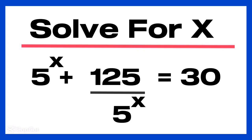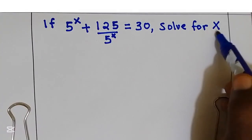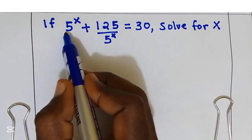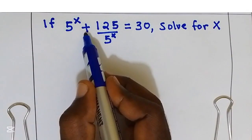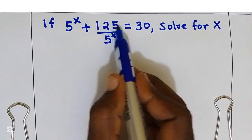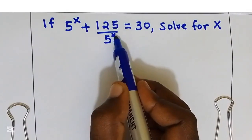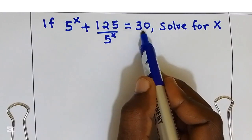Hello, welcome. My name is Walter. We have an exponential equation we are going to solve together. We are supposed to solve for x given: 5^x + 125 / 5^x is equal to 30.